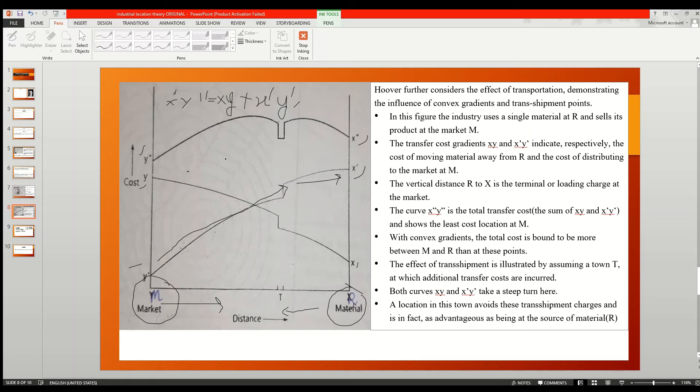With convex gradient, the total cost is bound to be more between M and R. The lowest two points of X dot and Y dot, we can see here at this point and this point, the costs are higher between these places.